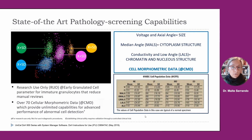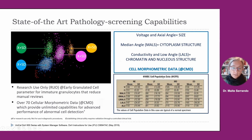Let's talk about the state-of-the-art pathology screening capabilities of this analyzer. First, the research-use-only parameters, such as early granulated cell. This parameter detects immature granulocytes, reducing the need for manual reviews in many cases and patient types. We also have over 70 cellular morphometric data points — called in the scientific literature cell population data — providing unlimited capabilities for advanced detection of abnormal cells. We can relate voltage and axial angle measurement to cell size, medium angle measurement to cytoplasm structure, and conductivity and low angle measurement to chromatin and nucleus structure.